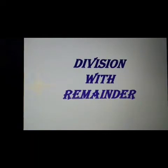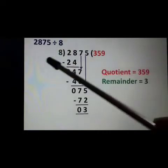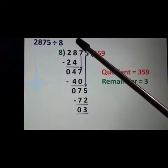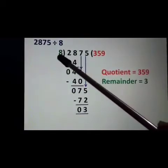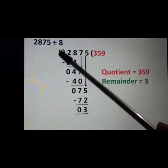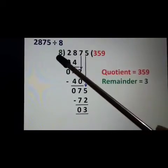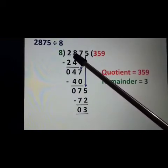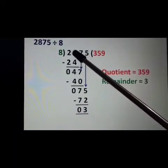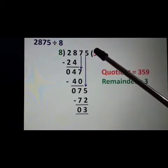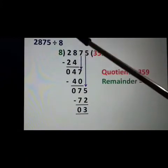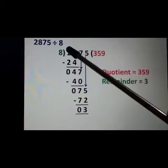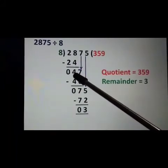Next is division with remainder. Let's see the example. We have to divide 2875 by 8. Here our dividend is 2875 and divisor is 8. 2 is smaller than 8, so we have to take 2 digits. We will subtract 24 from 28: 8 minus 4 is equal to 4 and 2 minus 2 is equal to 0. 4 is smaller than 8.